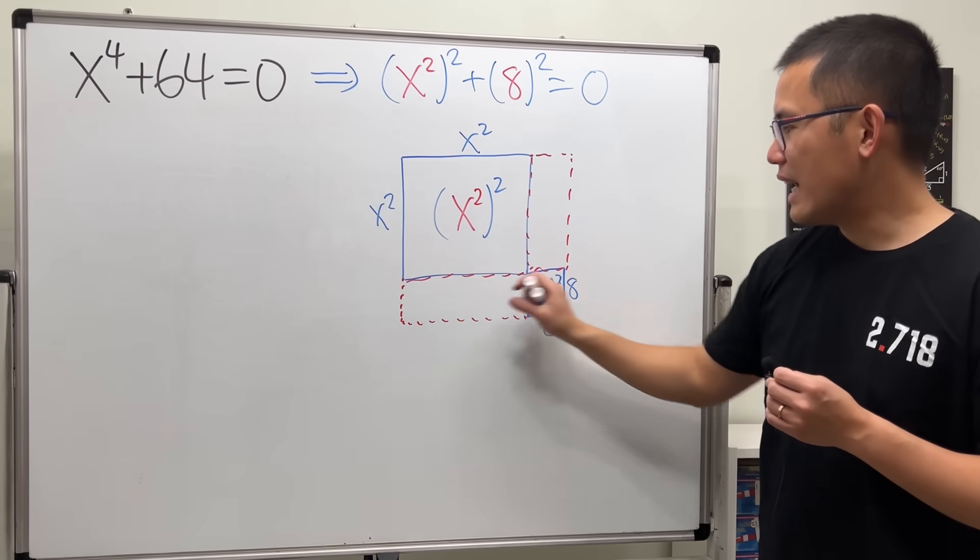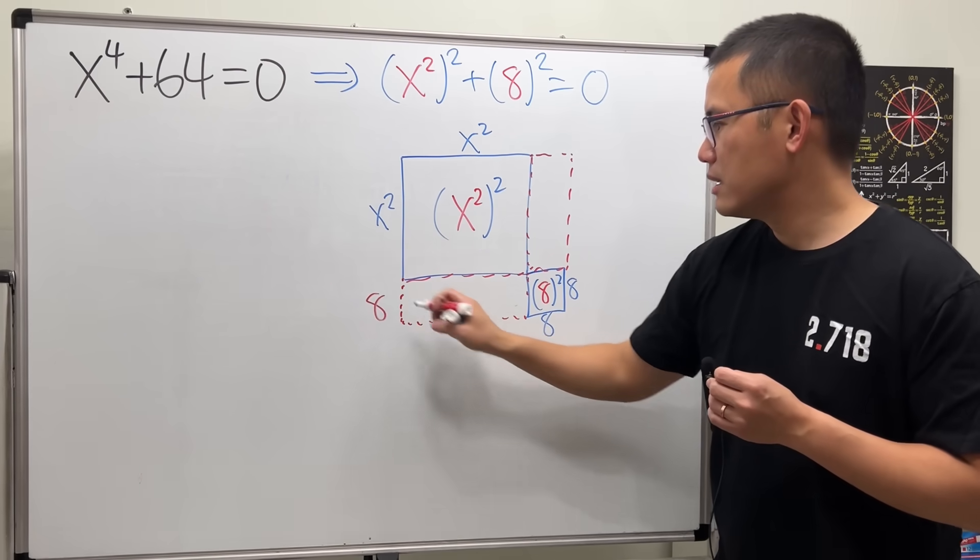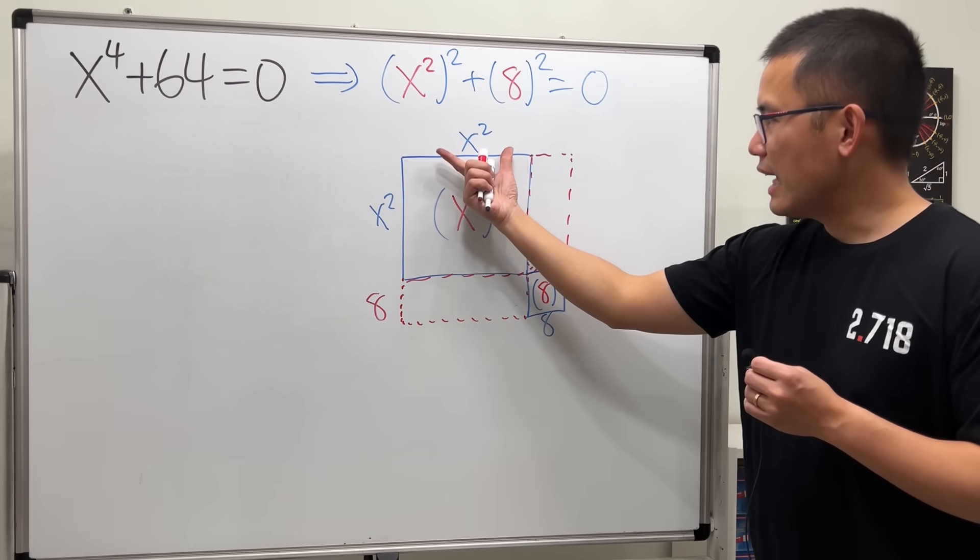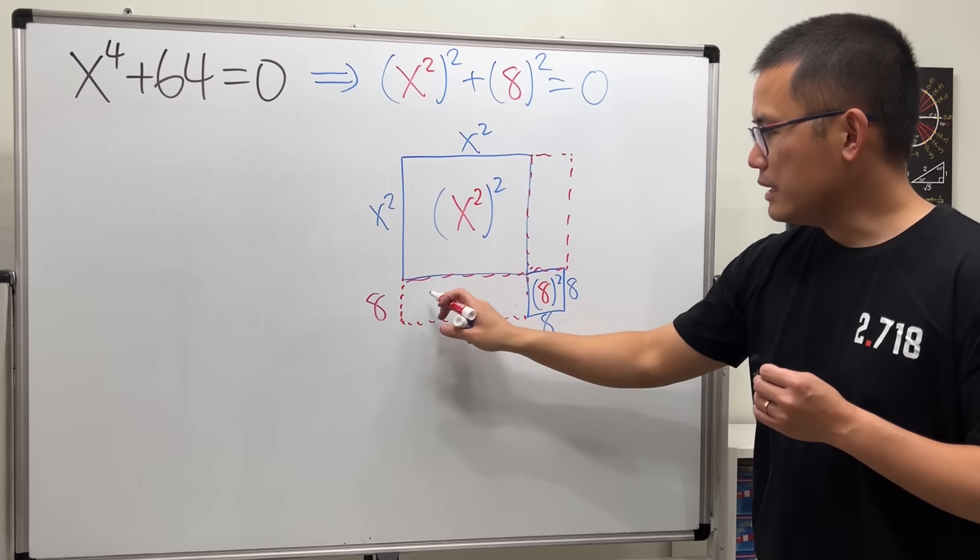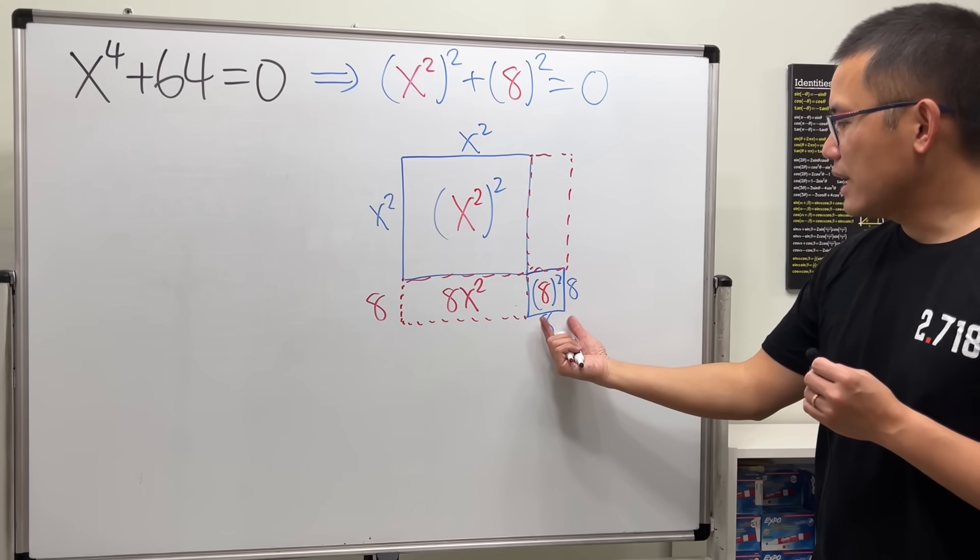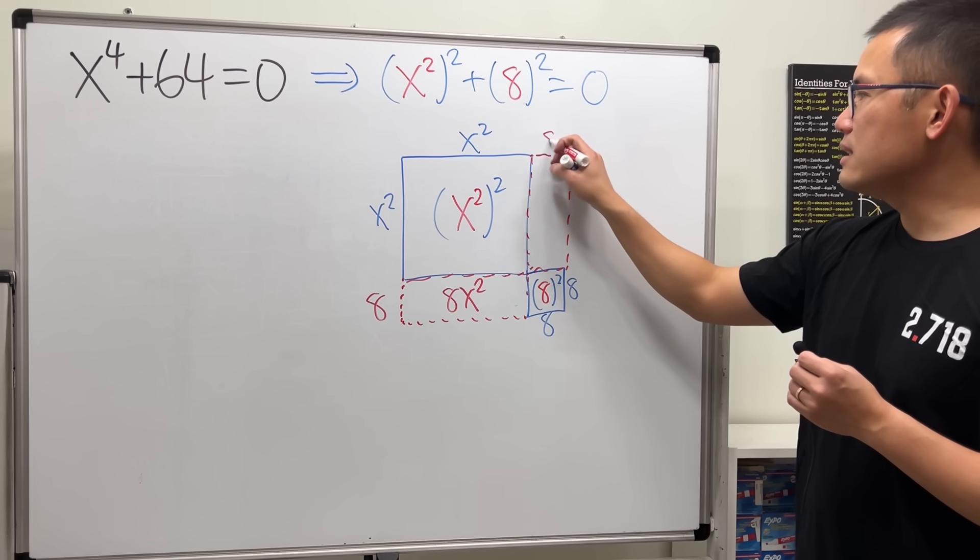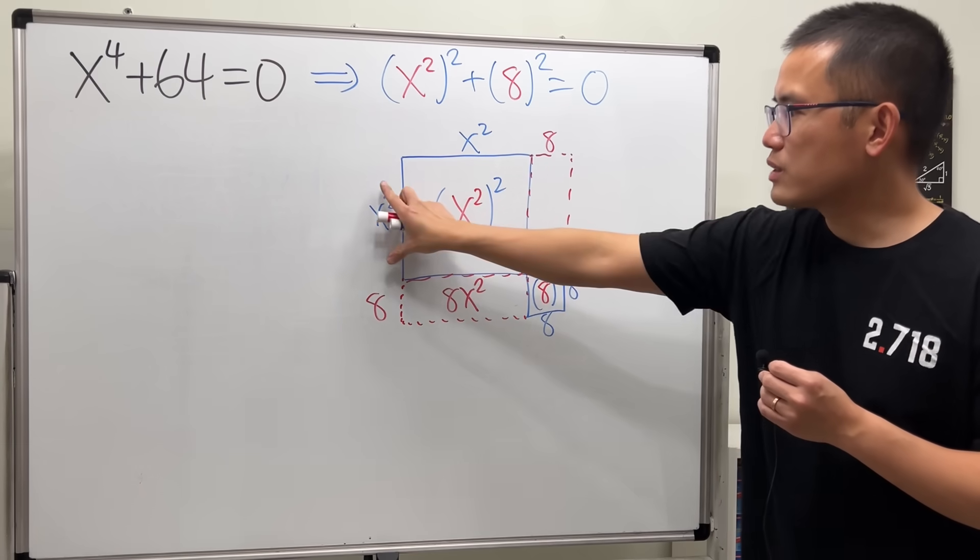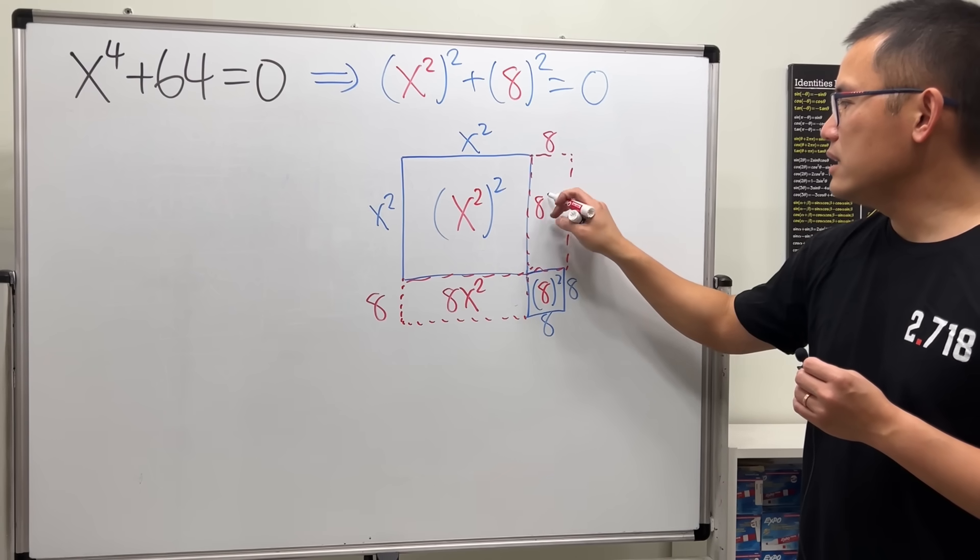Well, this side is 8. This side is x squared. So, this area is 8x squared. This side is 8. Go up. That's 8. This side is x squared. So, this area is 8x squared.